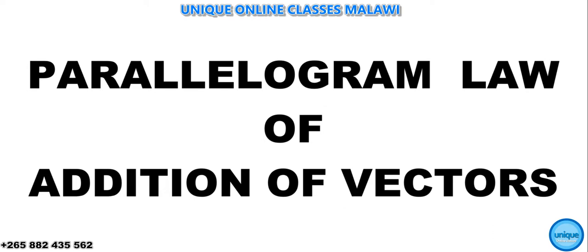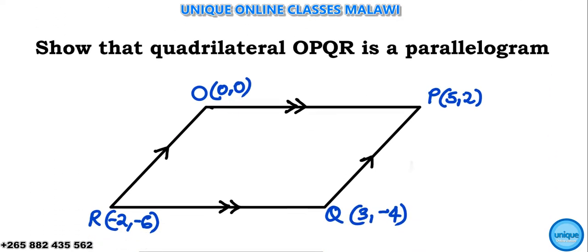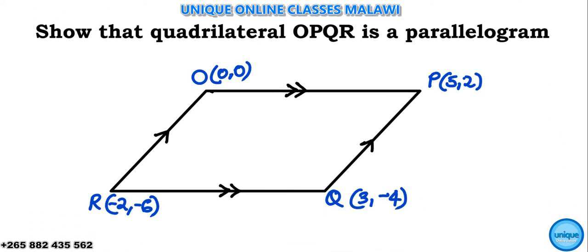The question reads: show that quadrilateral OPQR, as you can see, we should prove that this one is a parallelogram. Don't need to draw the parallelogram. Of course it's a parallelogram, but mathematically we should show that this quadrilateral is a parallelogram.